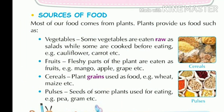Sources of food. Most of our food comes from plants. Plants provide us vegetables. Some vegetables are eaten raw as salads, while some are cooked before eating. Examples include cauliflower, carrot, etc.